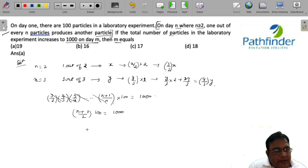So which means n plus 1 is 20, and n is equal to 19. So on the 19th day, you will have the total number of particles increasing to 1000.